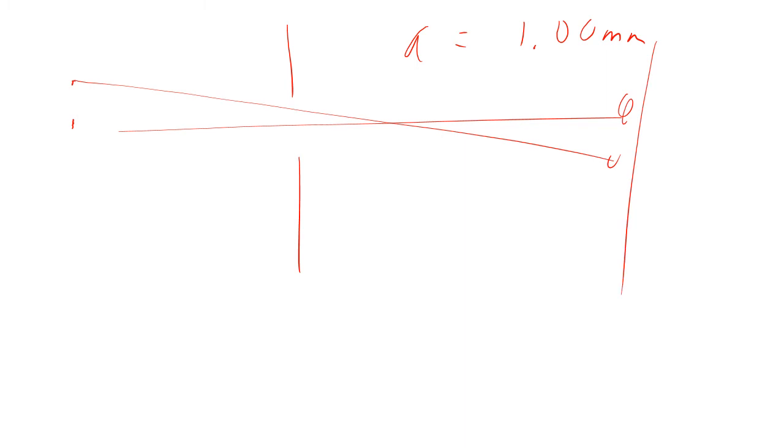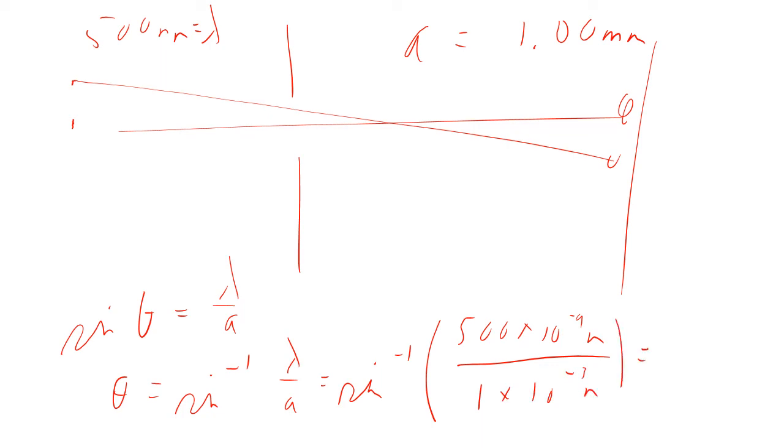Let's try another example. Now, let's say that we have an aperture here, and the aperture size is one millimeter. Then we have two light sources over here shining through. We're still going to say 500 nanometers wavelength. Sine theta is lambda over A. So theta equals the inverse sine of lambda over A, which is the inverse sine of 500 nanometers, 500 times 10 to the minus 9 meters, over 1 millimeter, 1 times 10 to the minus 3 meters.